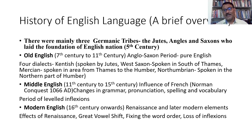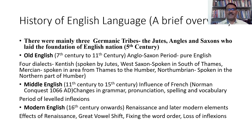Coming down to the Middle English period, we normally begin with the Norman Conquest. In 1066, the Norman Conquest happened. With this Norman Conquest, we see the influence of French on English. French influenced greatly both grammar, pronunciation, spelling, and vocabulary. Here you can see the cutting down of inflections, and that's why this period is called the period of leveled inflections.